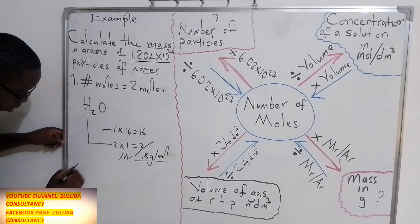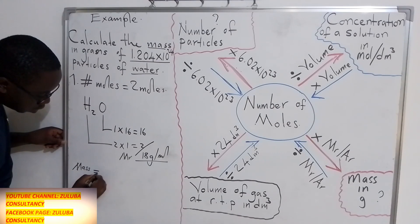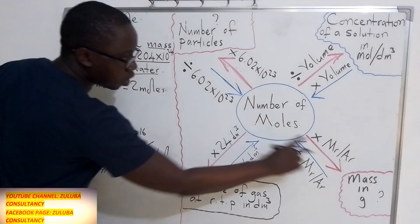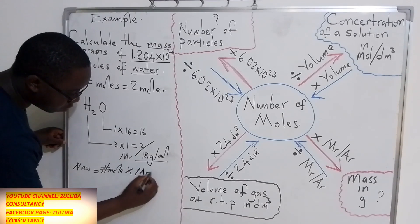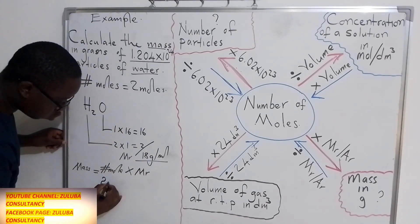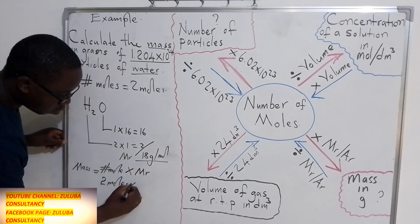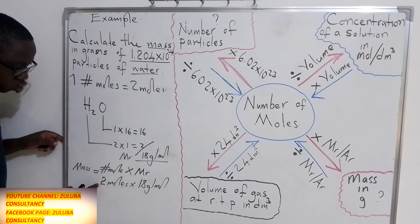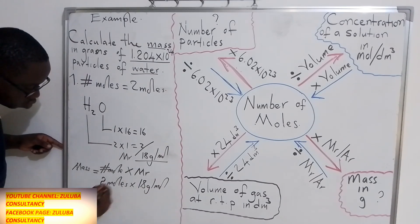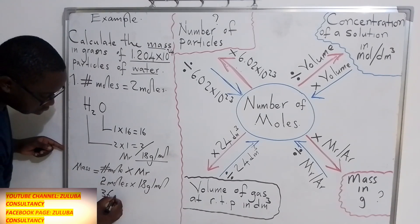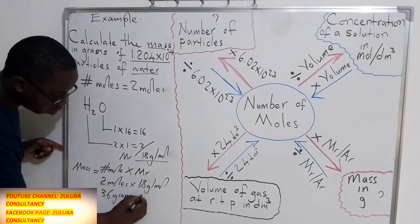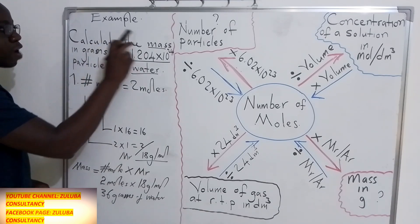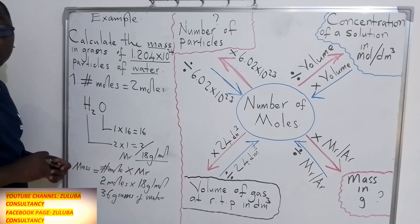To find the mass, mass = number of moles × relative molecular mass. The number of moles we calculated is 2 moles, multiplied by the relative molecular mass of 18 g/mol. Multiplying 2 by 18 gives 36 grams. So the mass of 1.204 × 10²⁴ particles of water is 36 grams.